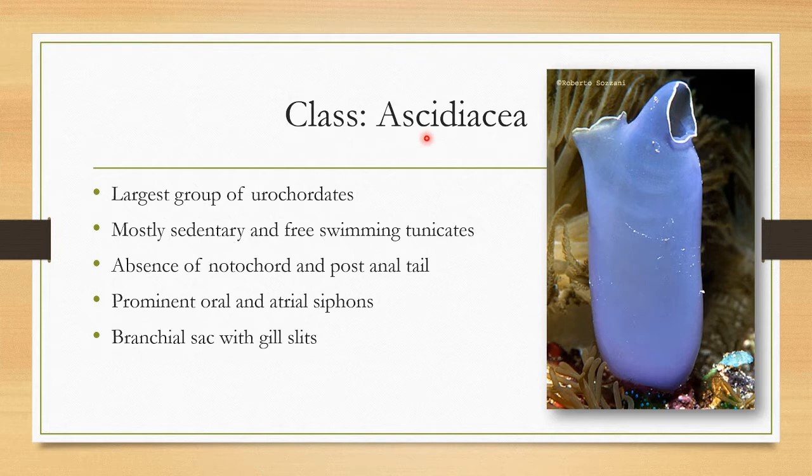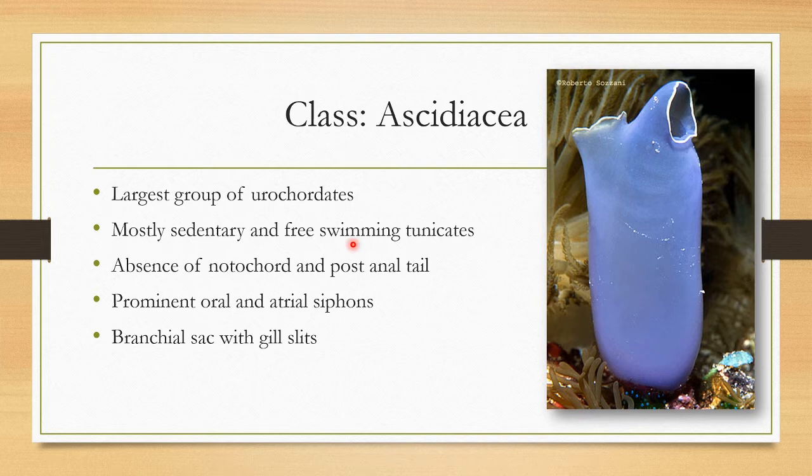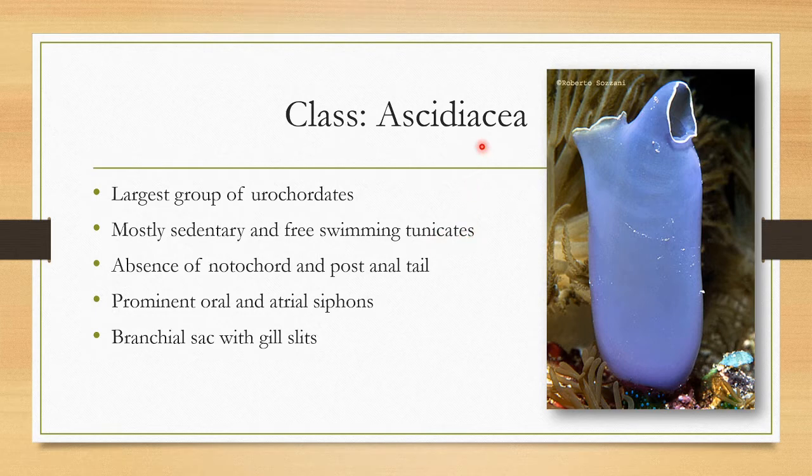Now the first class, Ascidiacea. This is an example for what Ascidiacea is, known as sea squirt or ascidian. The largest group of urochordates, mostly sedentary, that means they are fixed at the bottom of the sea, and some are free-swimming forms. They are commonly called tunicates because they have a covering called tunicin.